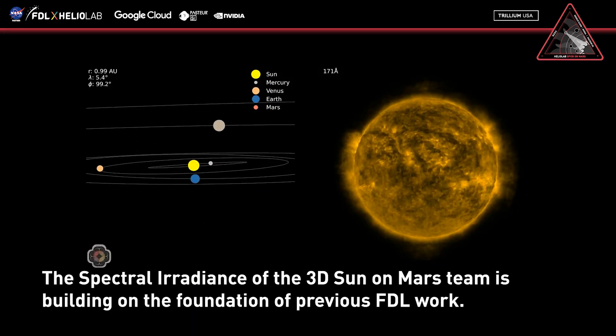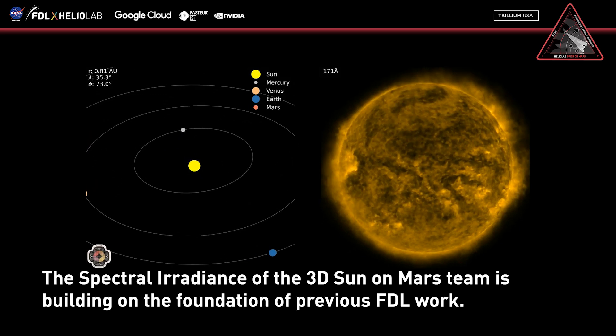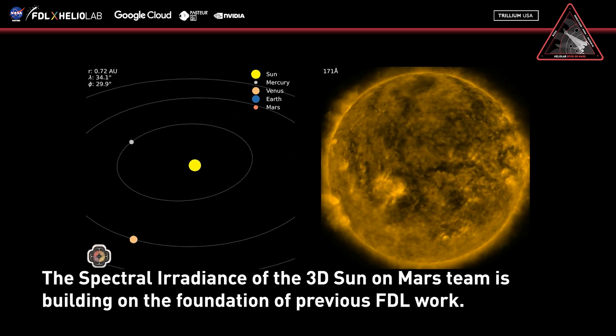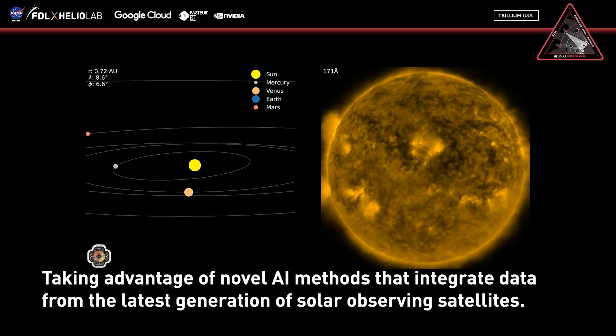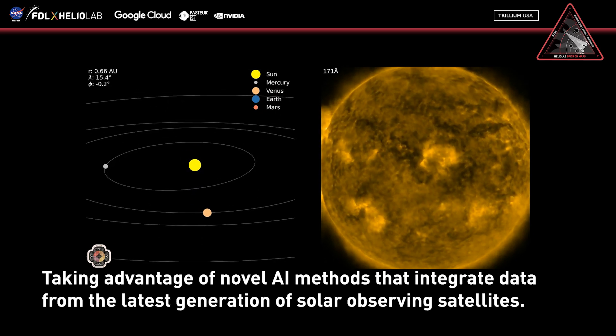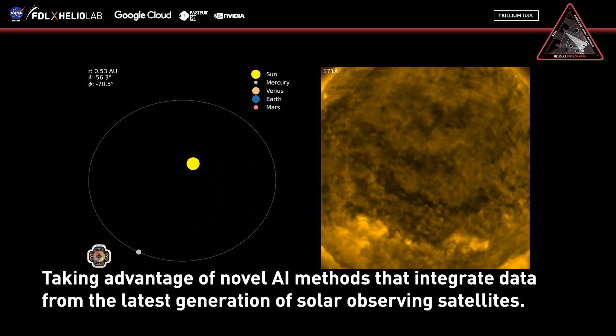The spectral irradiance of the 3D sun on Mars team is building on the foundation of previous FDL work, taking advantage of novel AI methods that integrate data from the latest generation of solar observing satellites.